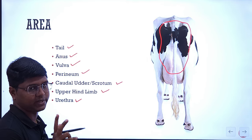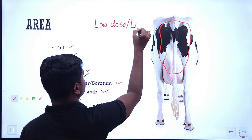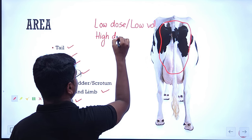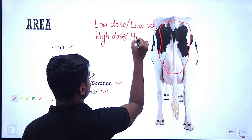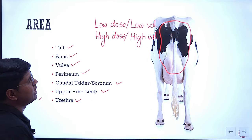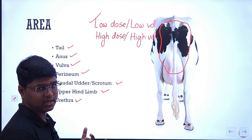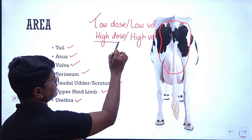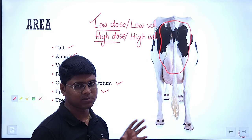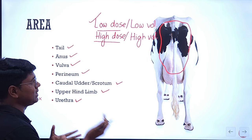Epidural anesthesia can be of two types. One is low dose or low volume epidural anesthesia, and another one is high dose, high volume. In this lecture we will be dealing particularly with low dose, low volume. I will discuss how the high dose affects and how the low dose or low volume affects when I explain the anatomy.